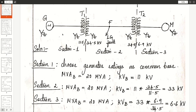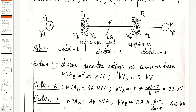Let us consider generator ratings as the common base. So MVAB is 20 and KVB is 11. Section 1 is the generator section. Based on the transformer, we divide the transmission network into three sections. In section 1, generator ratings are chosen as the common base. In section 2, MVAB remains the same at 20. KVB is equal to section 1 KV into transformation ratio of T1, which is 33 kV.